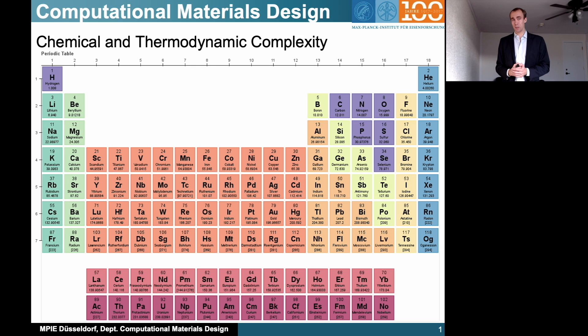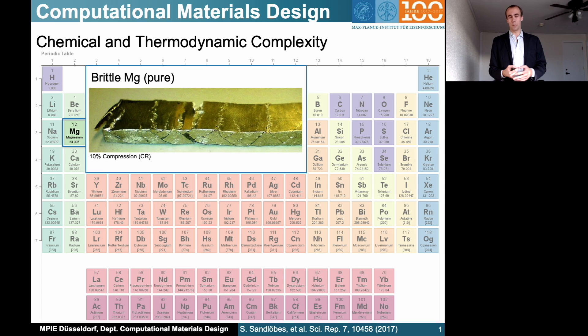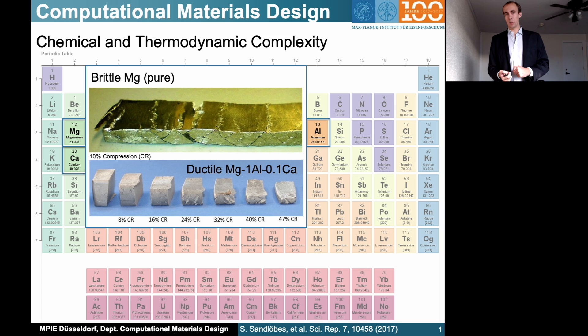The motivation to develop Pyron is really this general fascination about material science. If I take an element and only a very small concentration of alloying elements, I can get drastically different material properties. Take magnesium as an example — it's a very light material we would like to use for many applications. At already a 10 percent compression it becomes brittle. But if we add only about one weight percent of aluminium or a tenth of a weight percent of calcium, we can get a ternary alloy which is highly ductile and can be compressed up to nearly 50 percent.